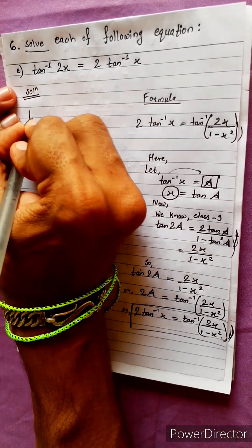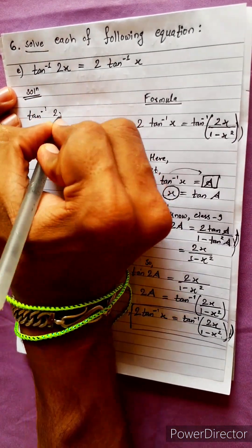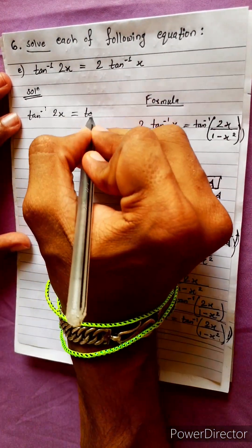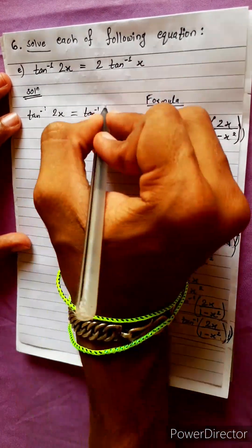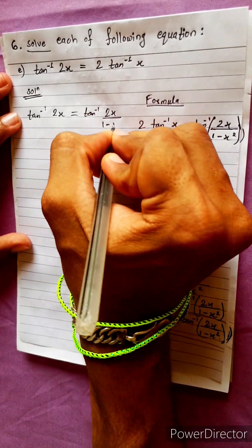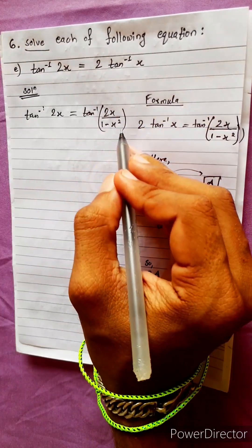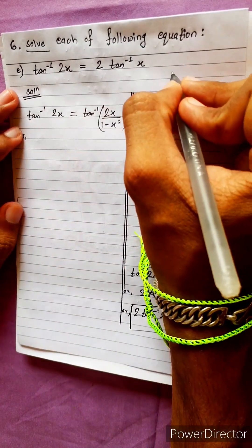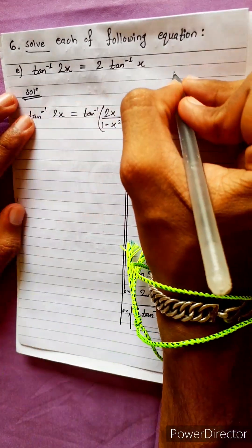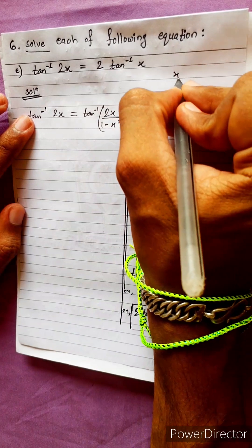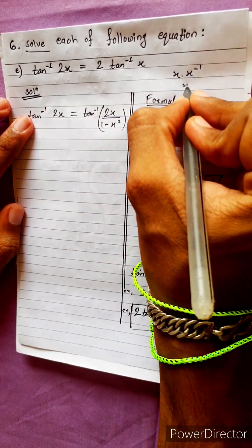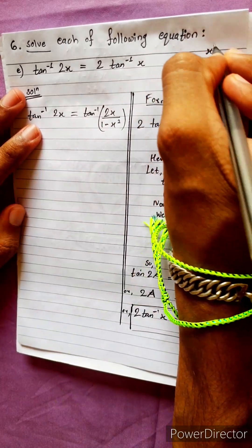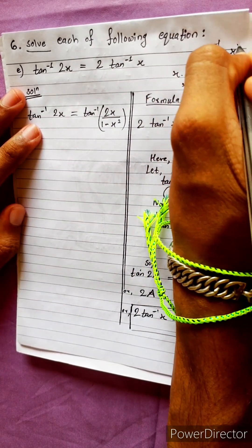tan inverse 2x equals to tan inverse 2x by 1 minus x squared. The tan inverse and tan inverse cancel, and x into 1 by x — the x cancels, giving inverse equals to x inverse.